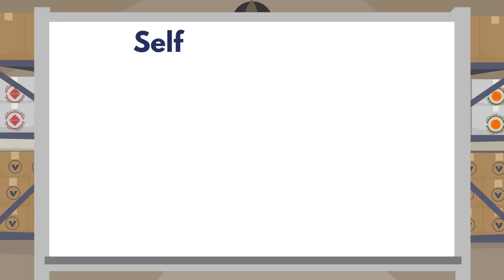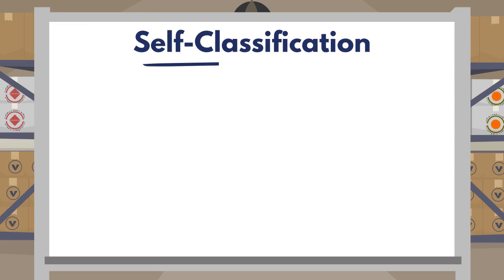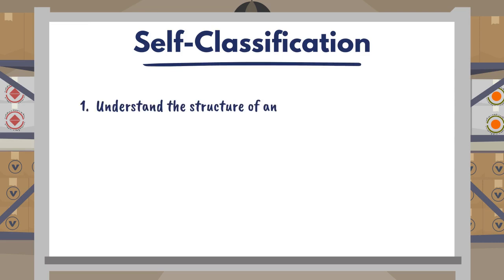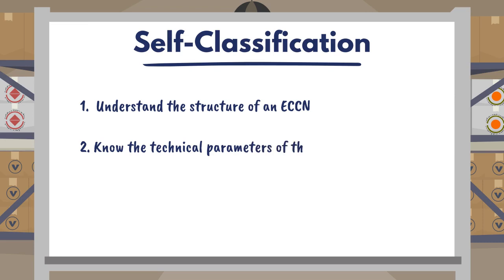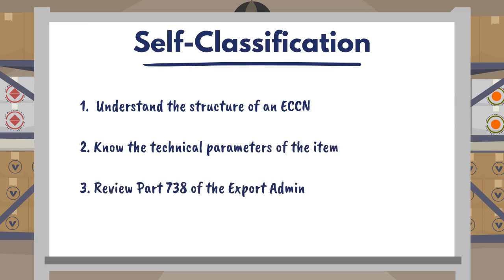Before starting the self-classification process, one needs to understand the structure of an ECCN and the technical parameters of the item, as most ECCNs are based on technical descriptions. It also helps to review the instructions in Part 738 of the EAR to learn how to use the Commerce Control List and read ECCN entries.